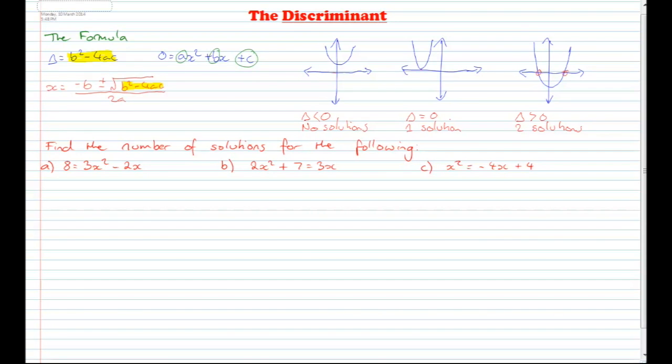Now what we need to do in this case is make sure that each one of these is equal to 0. So let's go through and do that. So we get 0 equals 3x squared minus 2x minus 8 when I subtract the 8 from both sides.